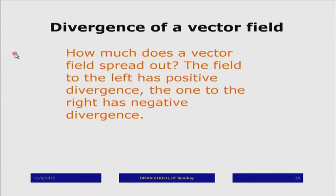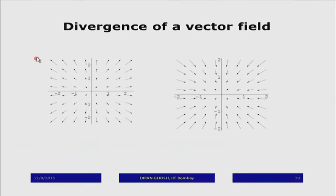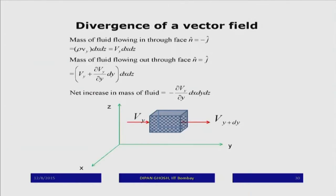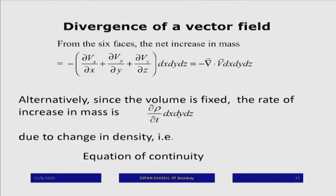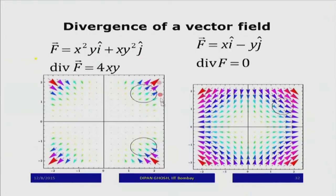Divergence tells me how much a vector spreads out. In this case you notice the fields are all diverging out — that is positive divergence. On the other hand, here the fields are all converging in — that is negative divergence. I also explained what is meant by zero divergence. This theorem gives me the equation of continuity.